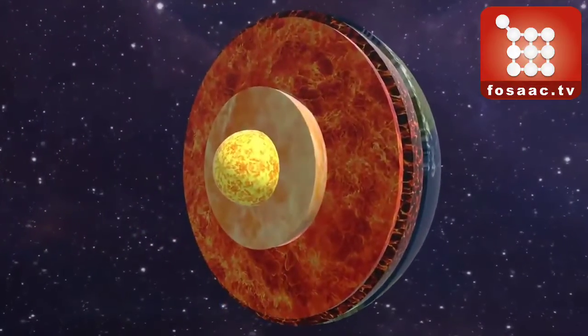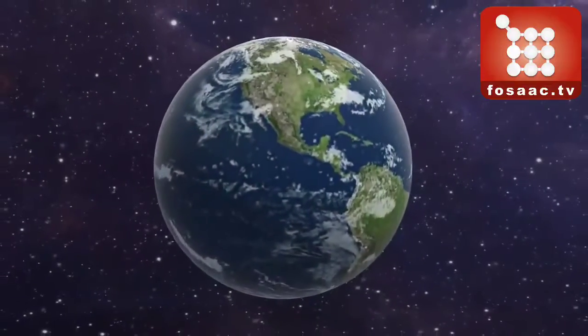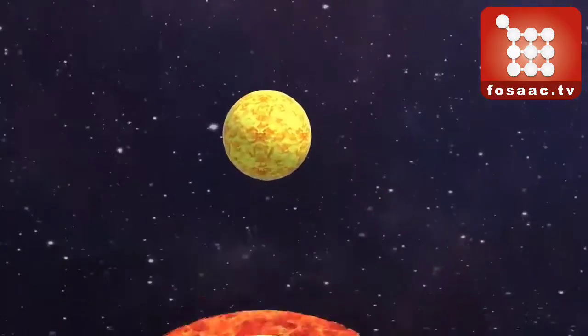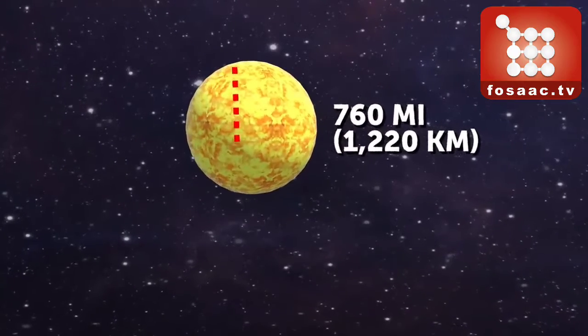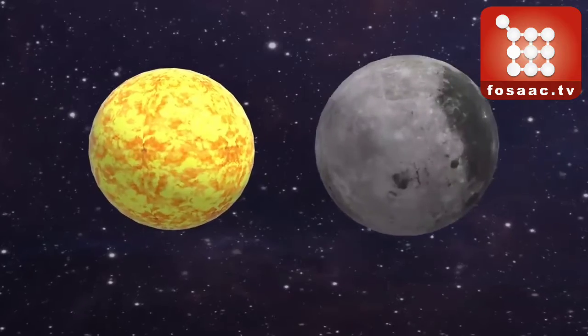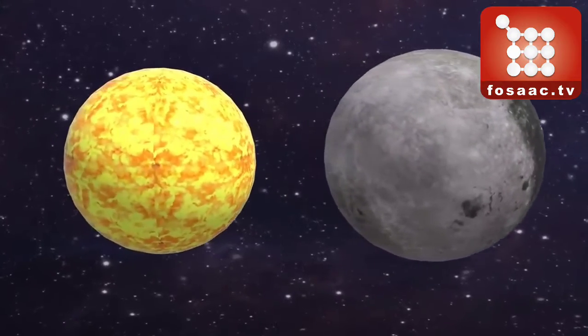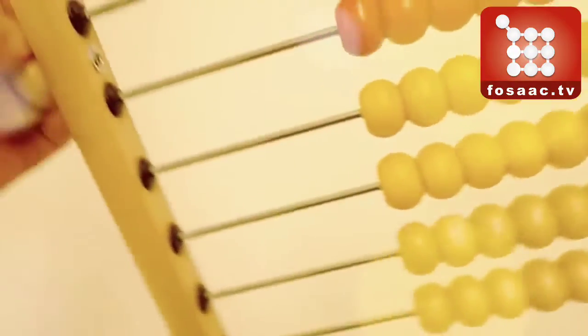The Earth's solid iron inner core is growing faster on one side than the other side, a new study by seismologists at the University of California, Berkeley U.S. According to the study, the inner core has been growing faster on one side ever since it started to freeze out from molten iron more than half a billion years ago.